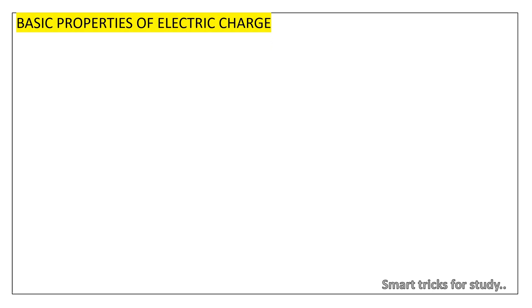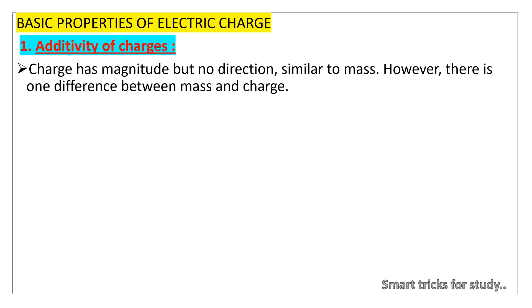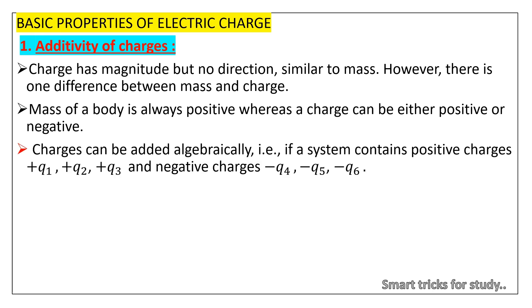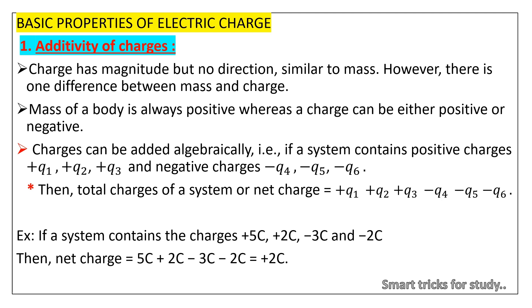Next we discuss about basic properties of electric charge 1: Additivity of charges. Charge has magnitude but no direction, similar to mass. However, there is one difference between mass and charge. Mass of a body is always positive whereas a charge can be either positive or negative. Charges can be added algebraically, that is, if a system contains positive charges +Q1, +Q2, +Q3 and negative charges -Q4, -Q5, -Q6, then total charge of a system or net charge is equal to +Q1 + Q2 + Q3 - Q4 - Q5 - Q6. Example: If a system contains the charges +5 coulomb, +2 coulomb, -3 and -2 coulomb, then net charge is equal to 5 coulomb + 2 coulomb - 3 coulomb - 2 coulomb = 2 coulomb.